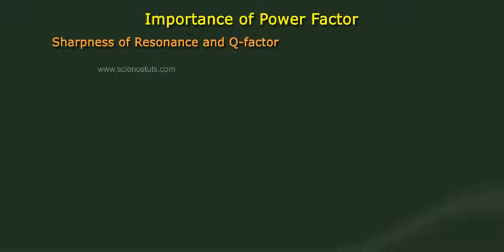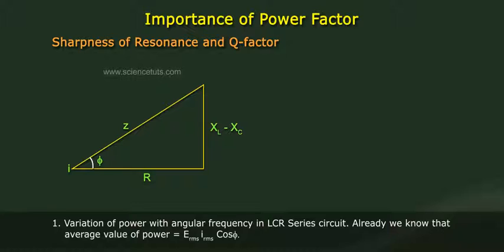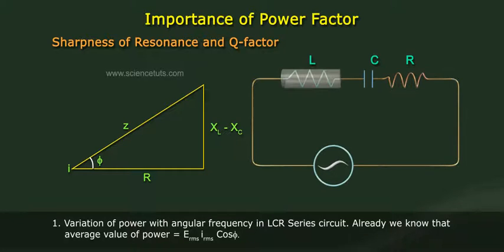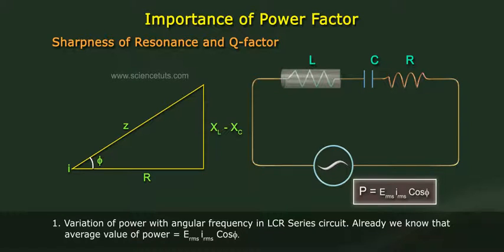Sharpness of resonance and Q factor. Point 1: Variation of power with angular frequency in an LCR series circuit. We already know that the average value of power equals E_rms times I_rms times cos(phi).